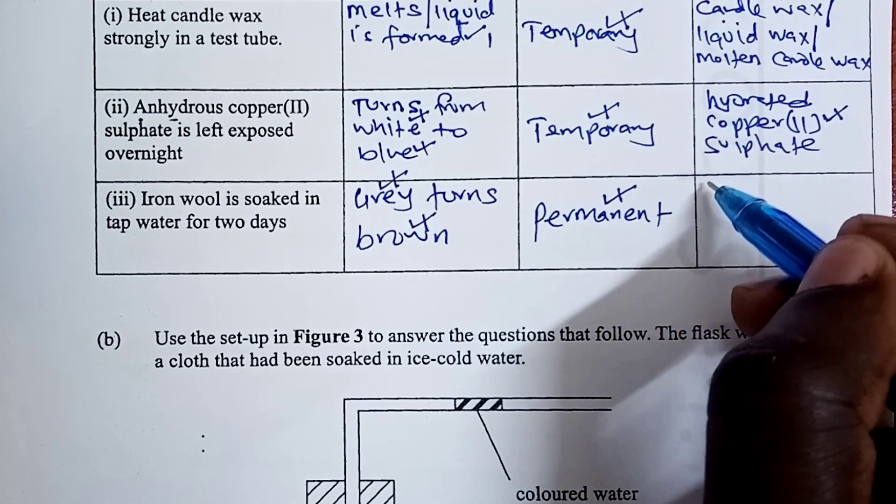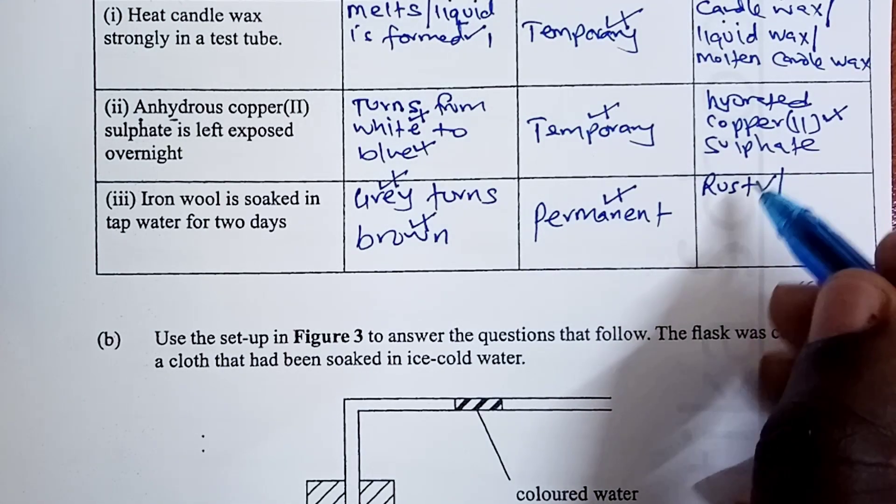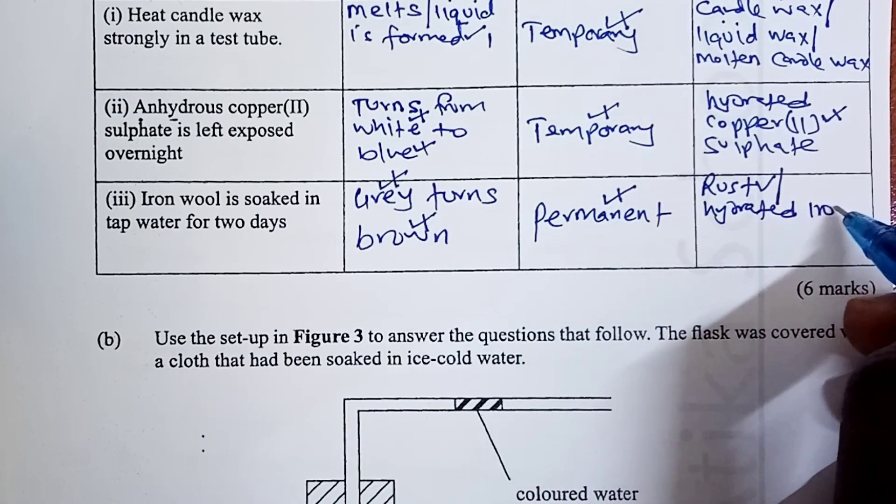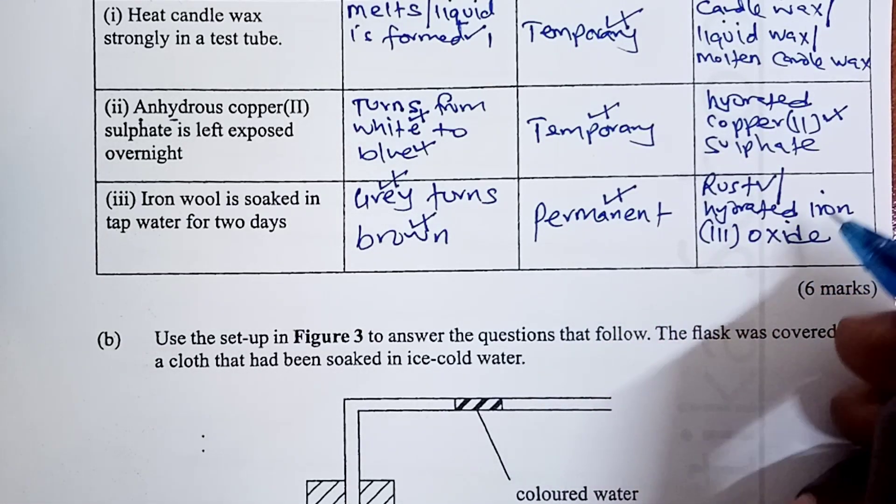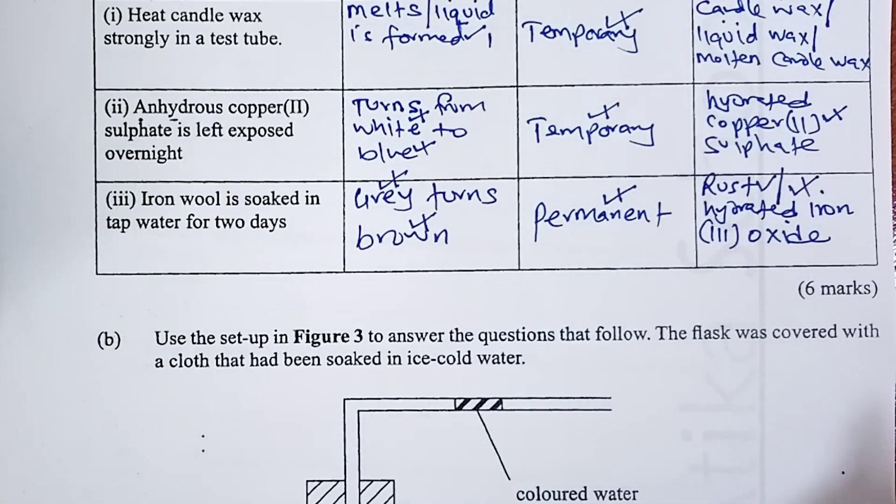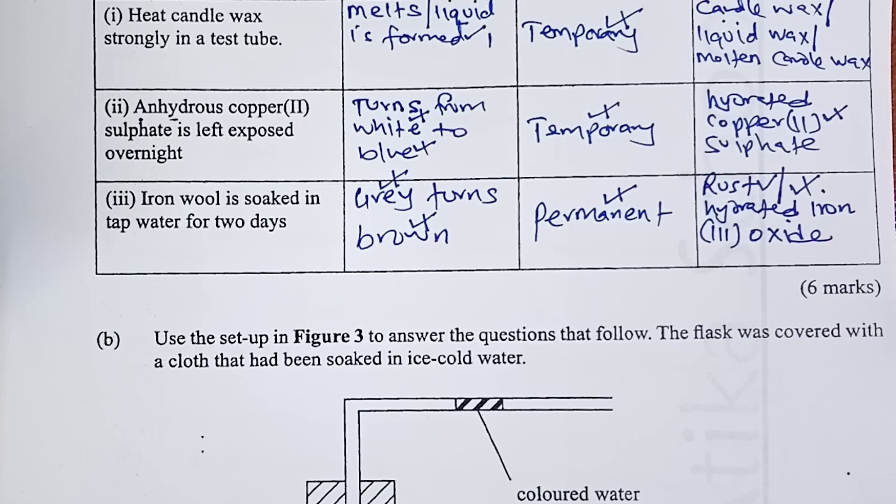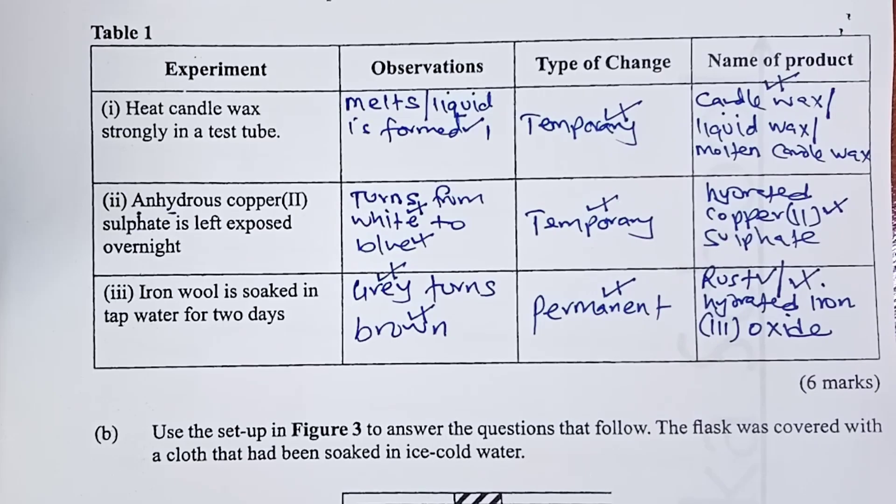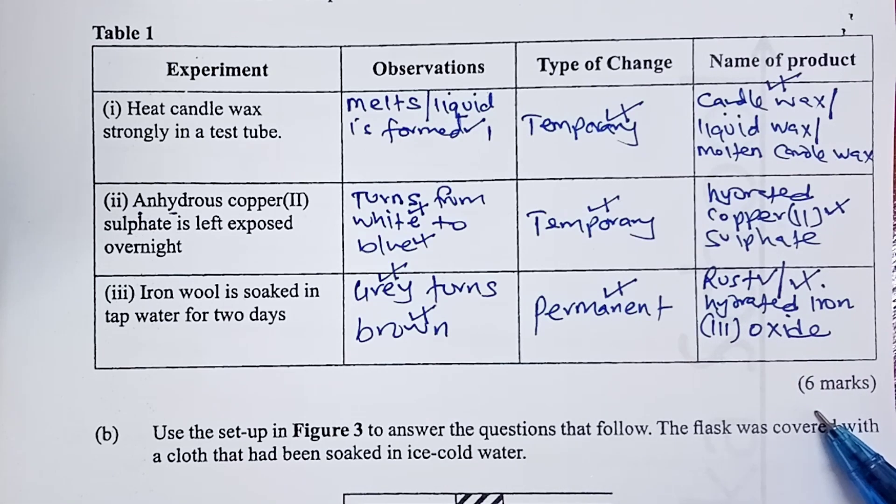The name of the product, rust, is allowed, but a student also had a better option of calling it hydrated ion-3 oxide. Because, that is the chemical name for rust, hydrated ion-3 oxide. Filling this table to completion and getting all the observations and the types of change and the name of the product correct were worth six marks.